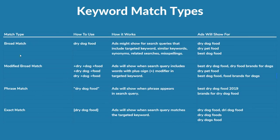Now I'm going to go through the four different keyword match types so you can understand how to use them and when ads will show for them. Before I get started, I never use broad match keywords — I think they're a little bit too broad. The problem with broad match keywords is they're going to show for synonyms, related searches, and similar keywords. So if you're targeting a broad match keyword like dry dog food, you might have ads show for dry pet food, best dog food, or even wet dog food.